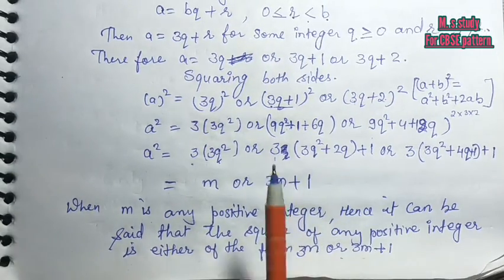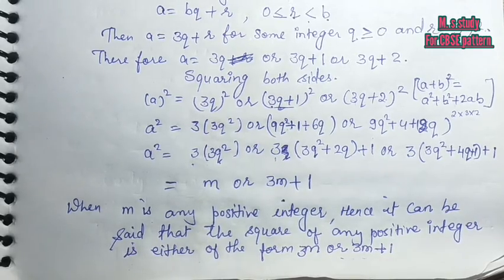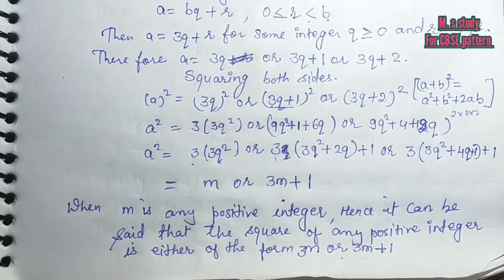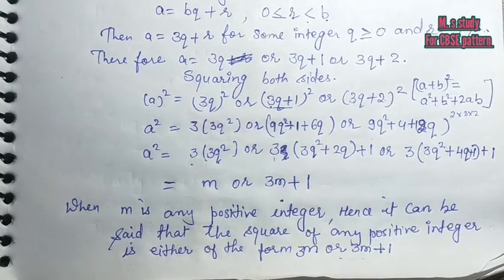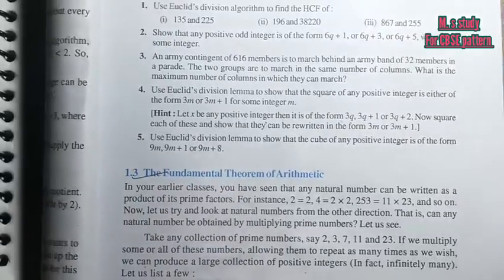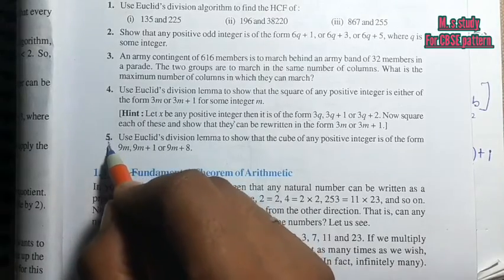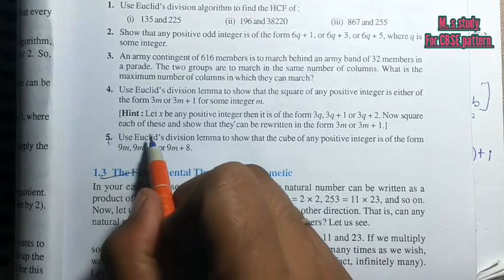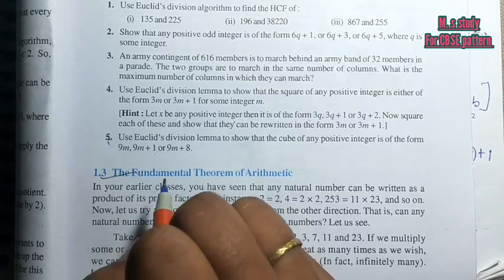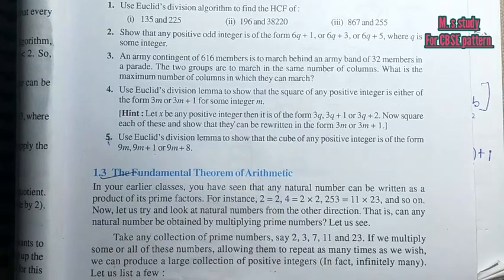This is your complete solution of question number 4. Now see question number 5, this is your homework. Use Euclid's division lemma to show that the cube of any positive integer is of the form 9m, 9m plus 1, or 9m plus 8. This is what you have to do in homework, and if you have a question you can show the solution in the comment box.